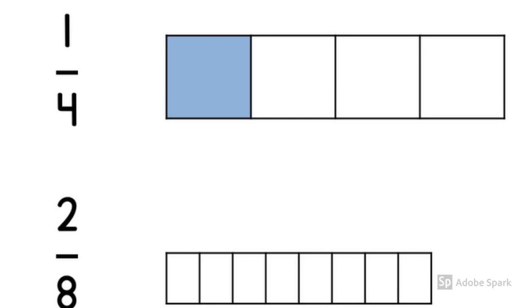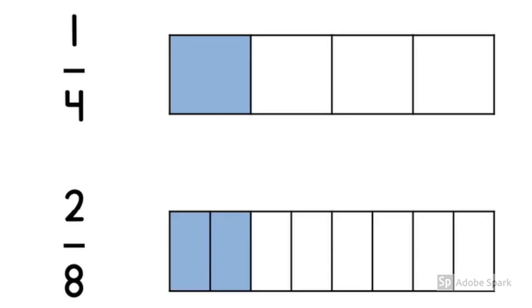Now let's take a look at two-eighths. I have drawn a bar model and I have cut it into 8 equal parts. But what have I done wrong here? That's right. If we're going to compare the bar models, then the bar models need to be the same size. Now my bar model is cut into 8 equal parts. Two of the parts have been shaded. Two-eighths.